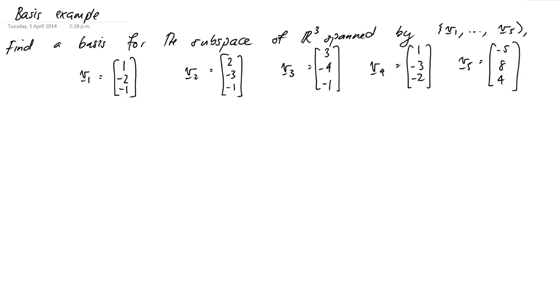As we talked about in class, the way to do this is to first stick them into a matrix. So you stick all your vectors inside a matrix side by side. I'm just sticking them all in: 1, negative 3, negative 2, negative 5, 8 and 4.